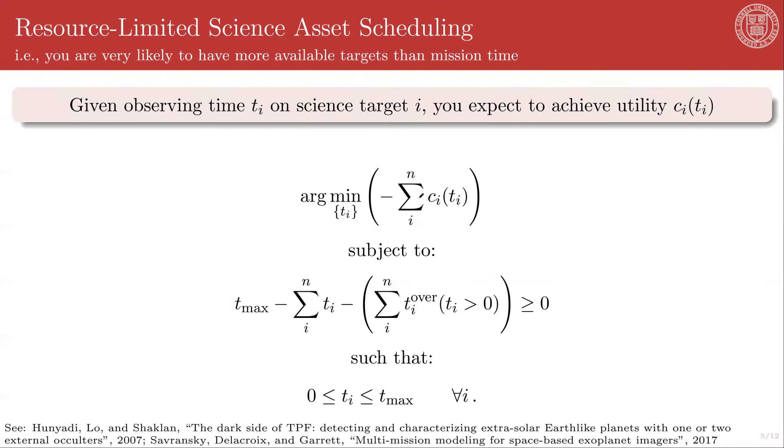And so the specific problem statement here is if I have some observing time on target i that I will call t_i, I should, if I have a way of evaluating the expected utility as a function of that integration time, what I want to do is to maximize the summed utility such that I have allocated all of my time. This is written as a minimization of a negative summation, which is exactly the same as a maximization. This c_i as a function of t_i, think of this as SNR, right? For example, if you have an SNR minimum, then you have science utility for clearing an SNR, which is obviously a function of your integration time, as an example.